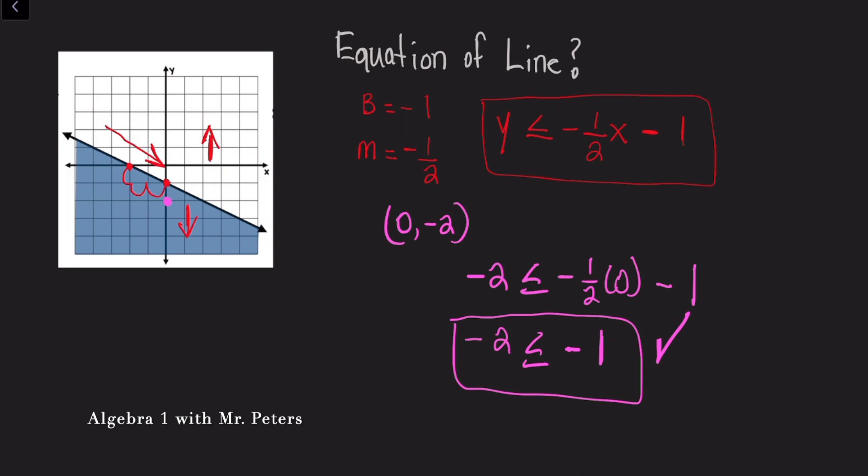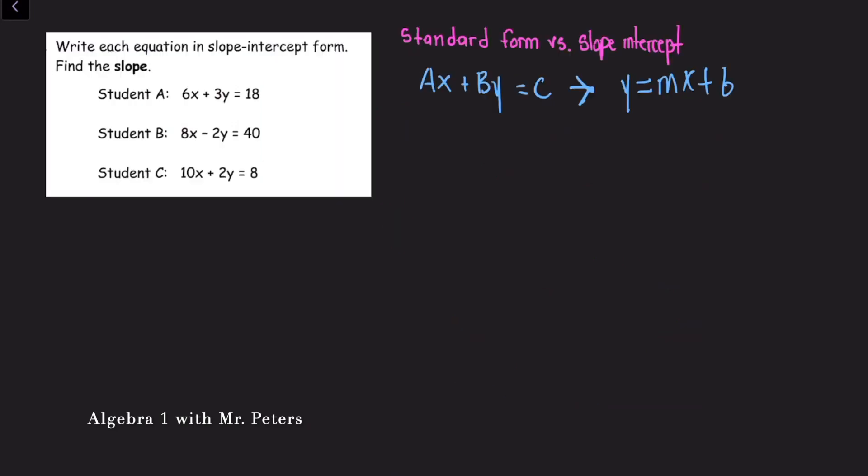But in problem number three now, what we're going to be working with is standard form and switching it into slope intercept form. So in the next three examples, we're working with a standard equation that follows the form Ax plus By equals C. And we want to get it to slope intercept form, y equals mx plus b. And the way that we do this, I know that there's different variables, but it's all there. When we look at the standard form, we basically want to get the y by itself.